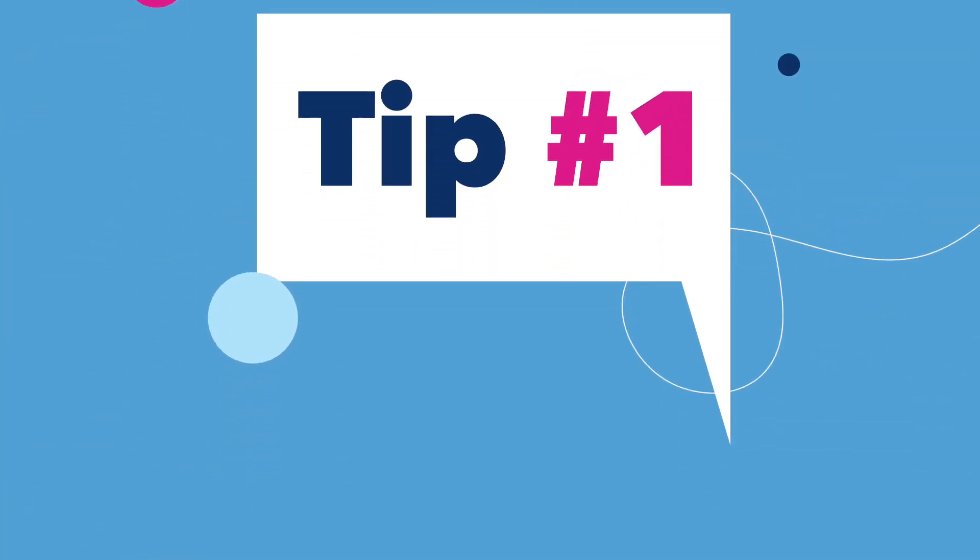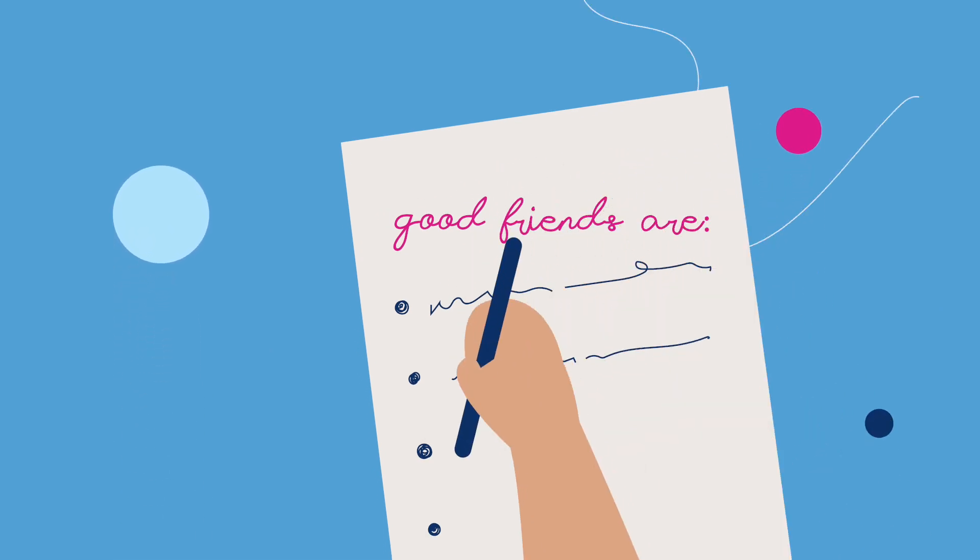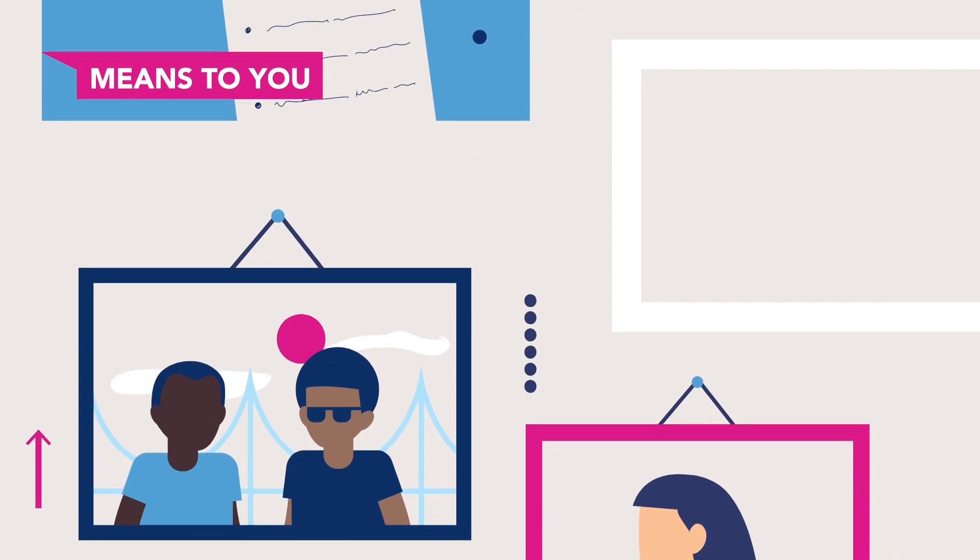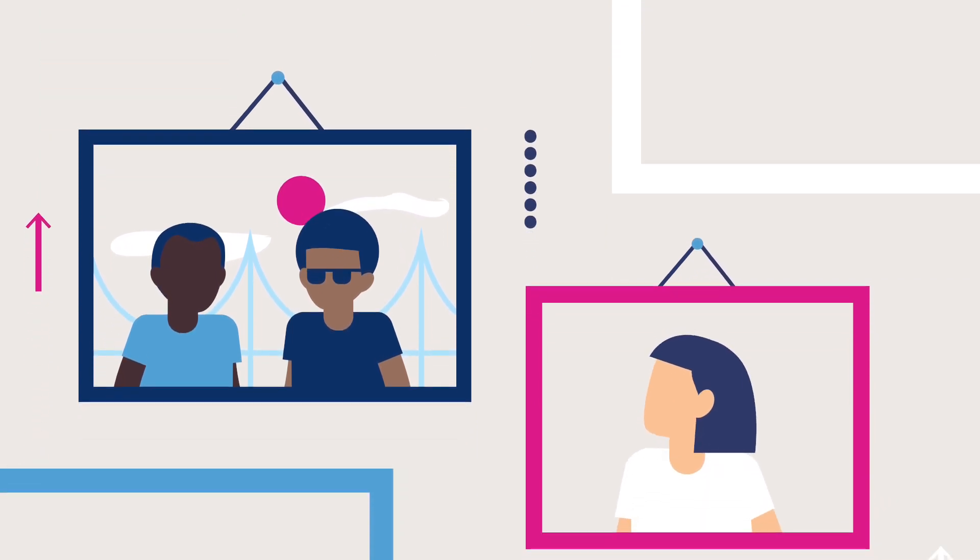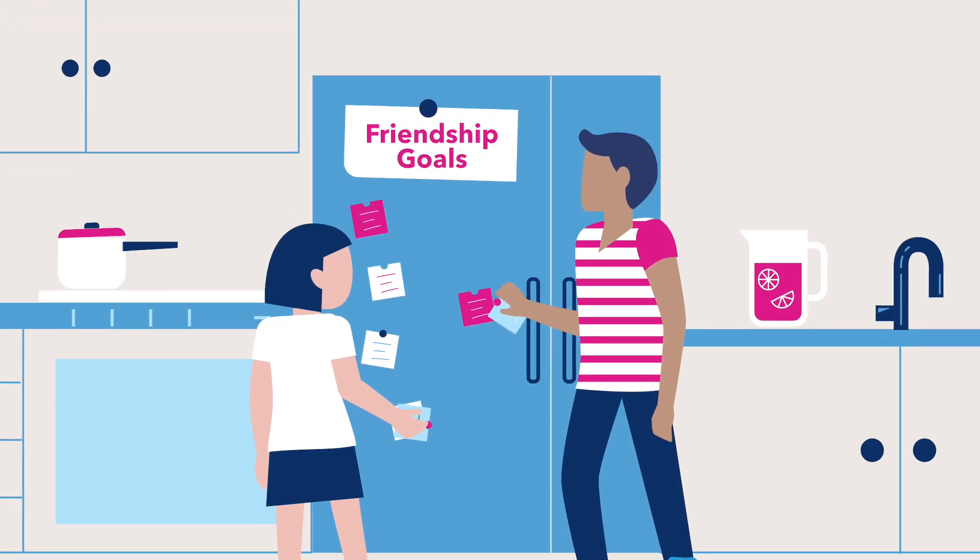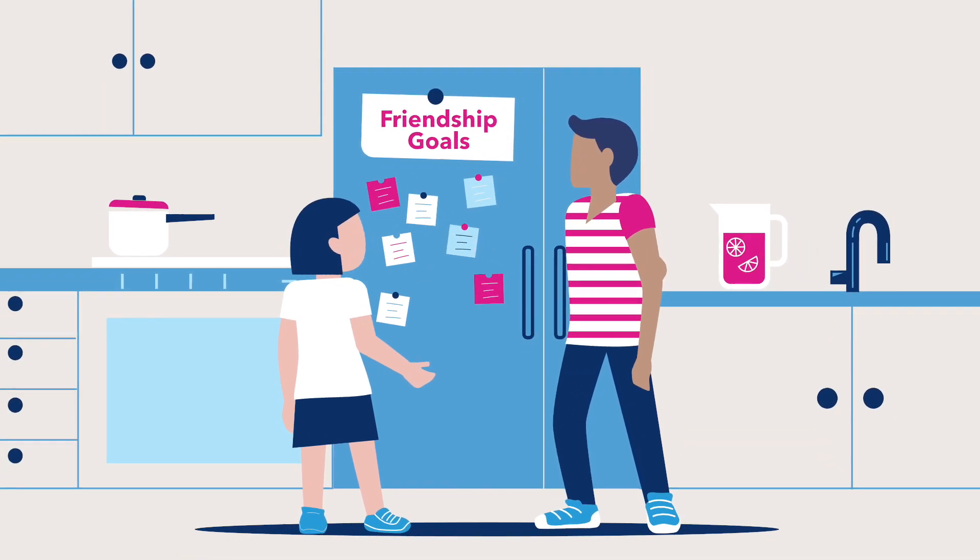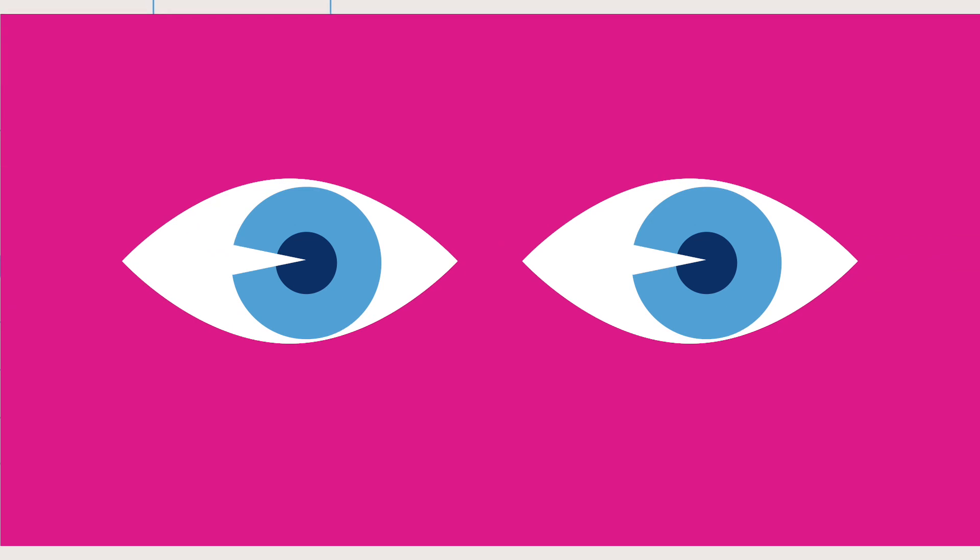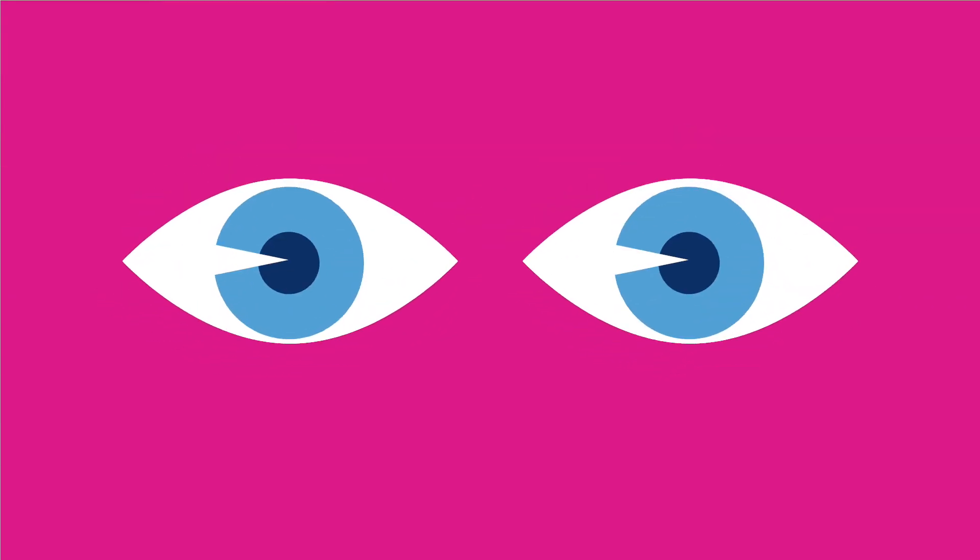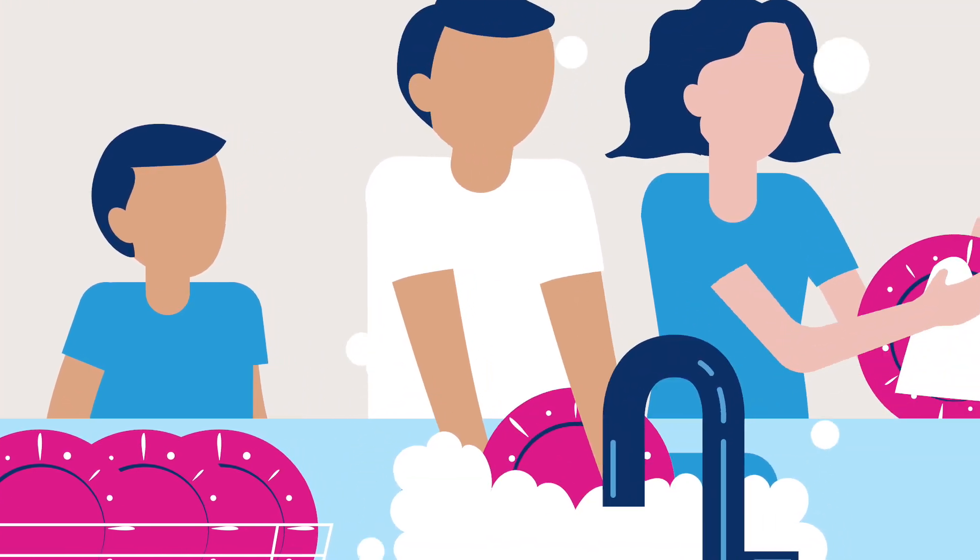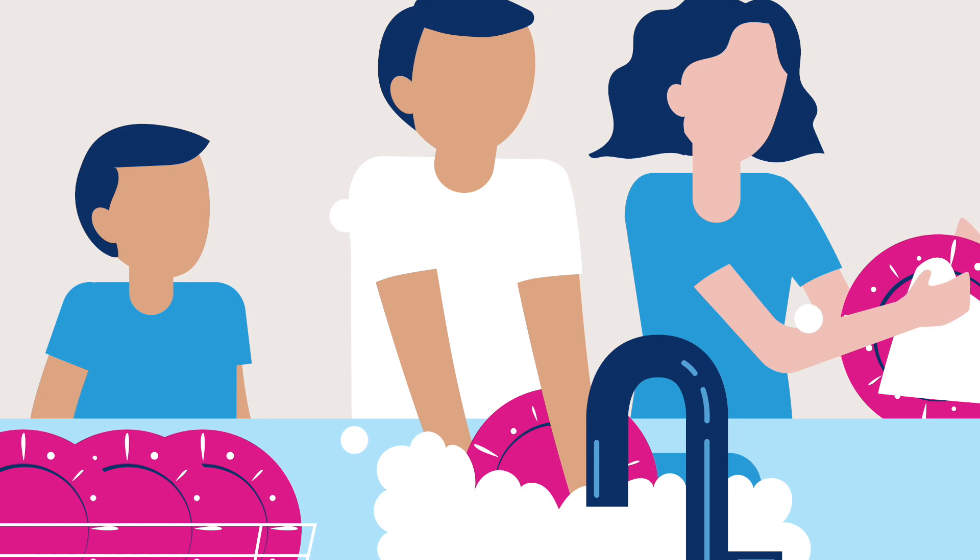Tip number one: take some time to think about what being a good friend means to you. Maybe that means someone you can always count on or someone you always have a good time with. Help your kids set expectations for how their friends should treat them and how they should treat their friends. Kids learn so much by watching what we do, not just what we tell them they should do. So model being a good friend to other adults in your life, including family and relationships.